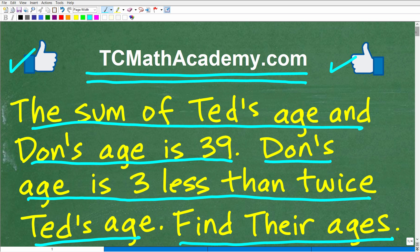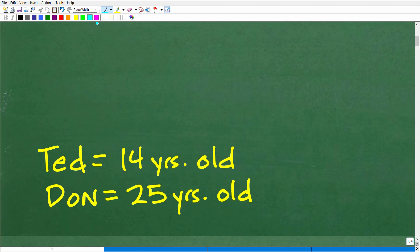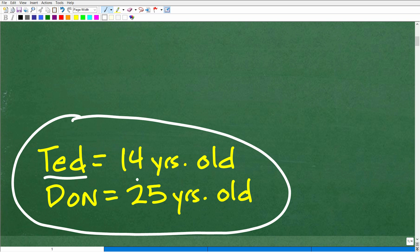Okay, so let's go and take a look at the answer here. Again, we're looking for the age of Ted and Don. So if you did this correctly, you would have gotten the following results. Ted is 14 years old and Don is 25 years old.